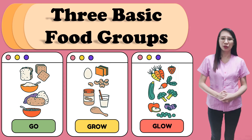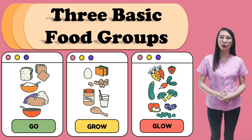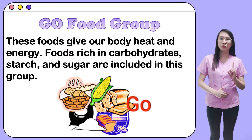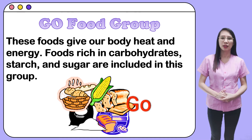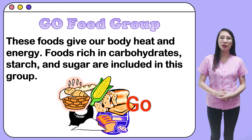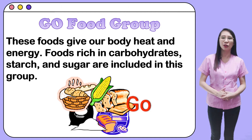Another important factor in achieving a healthy lifestyle and effective weight management is having a well-balanced diet. You are all familiar with the three basic food groups: the GO, GROW, and GLOW foods. The first food group is the GO Foods. These foods give our body heat and energy. Foods rich in carbohydrates, starch, and sugar are included in this group. Examples are rice, corn, bread, oatmeal, macaroni noodles, potatoes, camote, gabi, and cassava. Foods rich in sugar such as cakes, candies, honey, jam, jellies, molasses, and ice cream are also considered GO Foods.